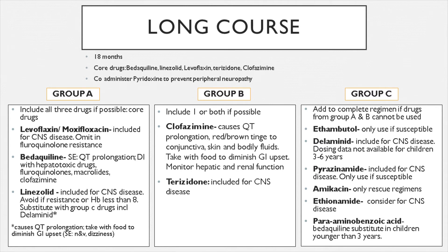For the long course, there are groups A, B, and C. Groups A and B are given together, and group C is added on to A and B if the regimen is not complete or if a drug in A or B cannot be used. In group A there are three drugs including levofloxacin or moxifloxacin — these are included if you have any CNS disease or are likely to get CNS disease. If the patient is resistant to fluoroquinolones, levofloxacin would be removed and replaced with a medication from group C.